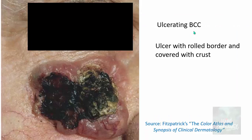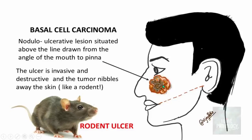The ulcerating type of basal cell carcinoma can present as a large ulcer in the same head and neck region. These ulcers have rolled borders and are often covered with crust. Because the tumor nibbles away the skin like a rodent, it is often referred to as a rodent ulcer. The illustration shows a nodulo-ulcerative lesion situated above the line drawn from the angle of the mouth to the pinna.